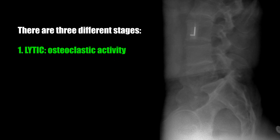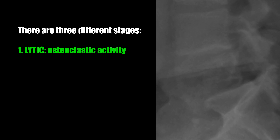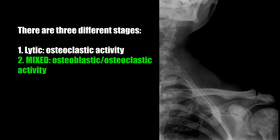There are three different stages of Paget's. The first is lytic, where you have osteoclastic activity. Here the L5 vertebral body is osteolytic in appearance, as opposed to what we typically expect from Paget's, which is an increase in bone density.